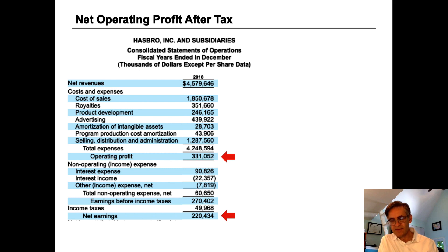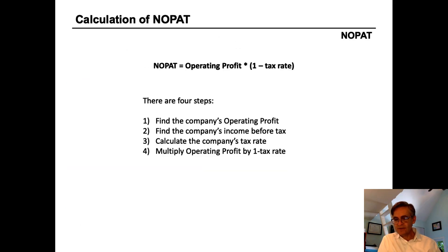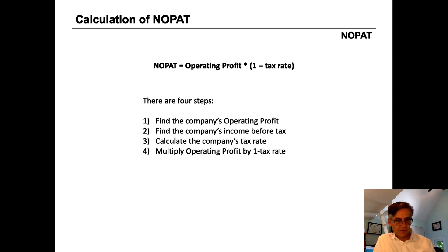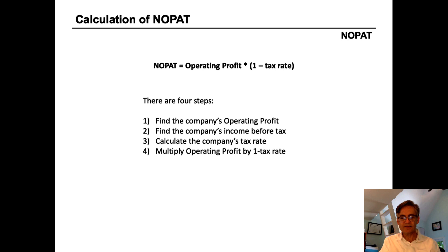NOPAT is essentially the amount of money that a company will have earned before interest but after tax. It represents the earnings that a company would have if it had no debt and therefore no interest expense. While it's not usually on an income statement, it is fairly easy to calculate, and there are four steps. Let's go through them and look at how we do that for a real company step-by-step.